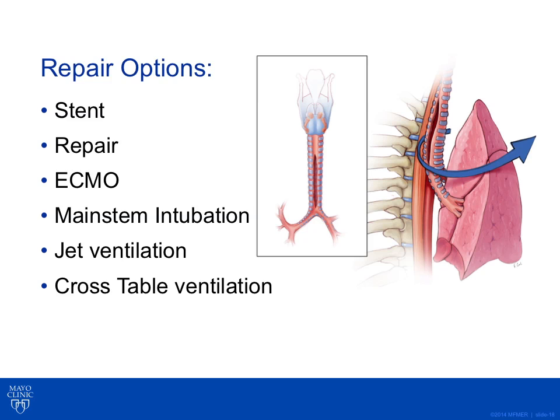Jet ventilation may allow a temporary ventilatory mode during repair but is not a long-term option. Cross-table ventilation is another heavily utilized tool when tracheal surgery is performed, especially when repair extends down onto the left mainstem bronchus. Patients can be ventilated by an endotracheal tube connected to cross-table ventilation inserted through the thoracotomy by the surgeon. It is important that FiO2 be brought below 35-40% prior to any sparking energy source to avoid an airway fire.